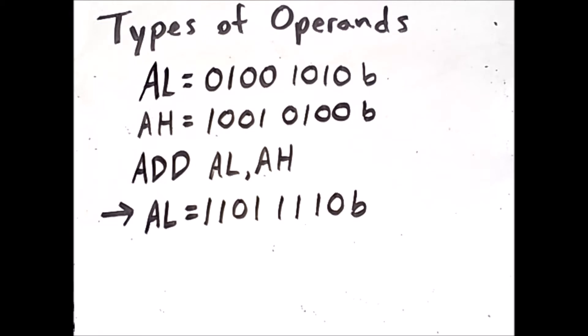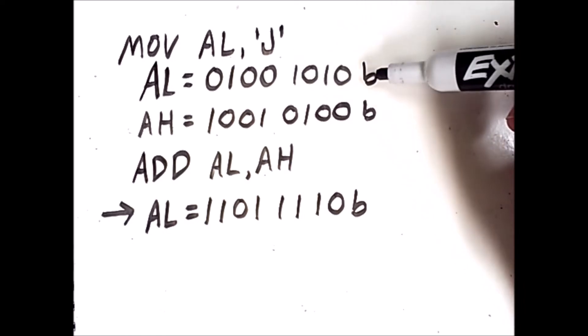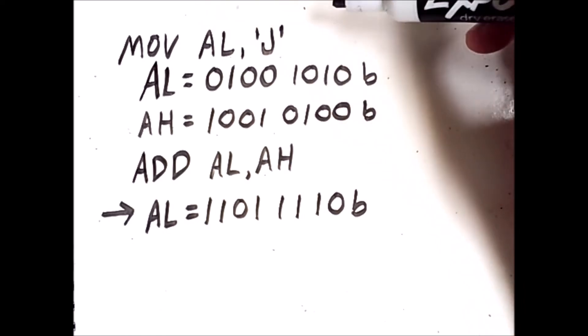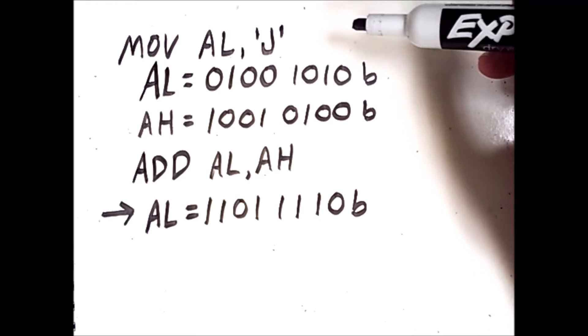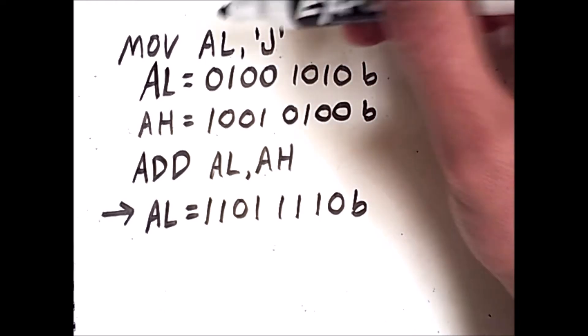For example, I could have loaded the value that is in AL in the following way. Here we see that the way that this value, this series of bits, got into AL was with a move command where I put the ASCII character J into AL.